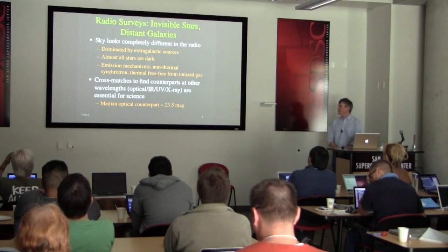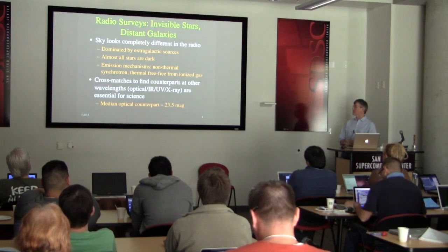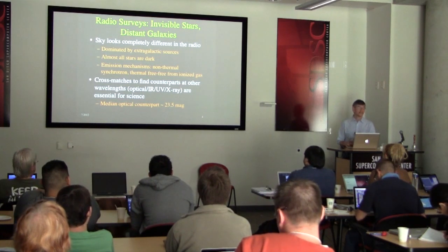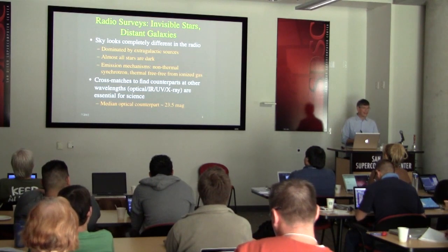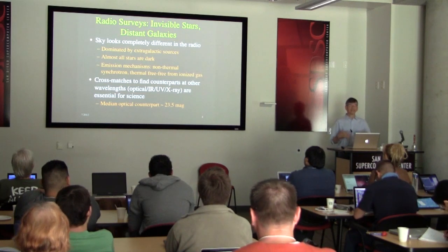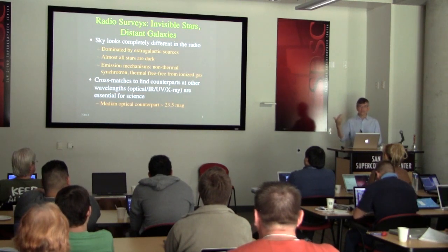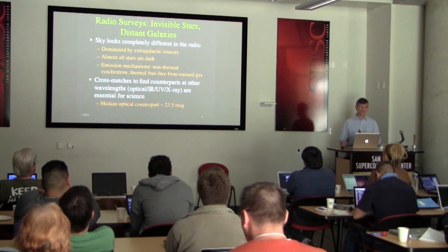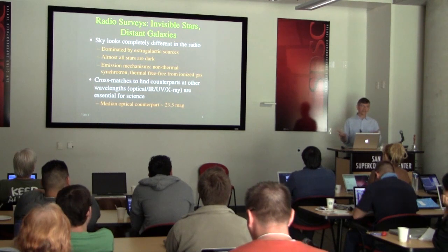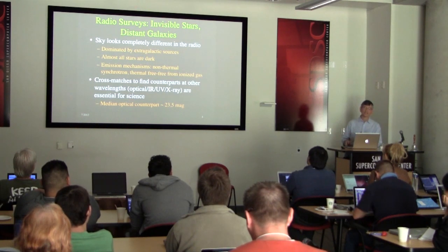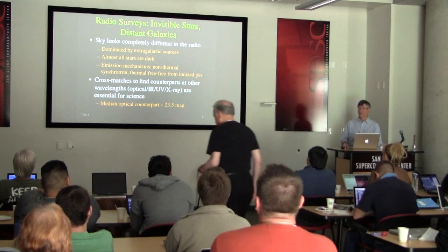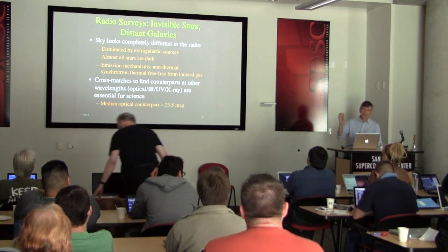Radio surveys are really weird. The sky looks completely different in the radio than in the optical, infrared, or x-rays. If you go out and look up, you see about 5,000 stars — all nearby things in our galaxy. There's one external galaxy visible to the naked eye in the northern hemisphere, the Andromeda galaxy, M31, which looks like a fuzzy patch.